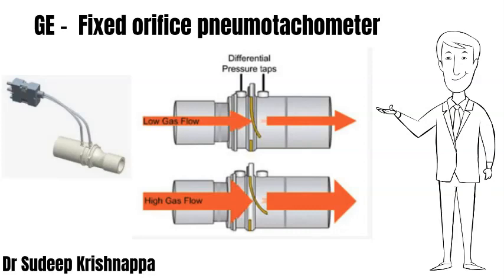In order to overcome this, the restrictor used is constructed in the form of a flap made of a synthetic material called Mylar. At low flow states, the flap is in its natural state, forming a small slit-like orifice, which generates a measurable differential pressure despite low flow levels. As gas flows increase, the flap opens more, reducing resistance to flow while still generating a pressure drop so that flow can be measured. There is a one-to-one correspondence between each flow rate and the pressure drop it creates.